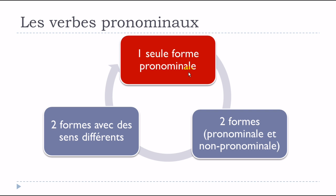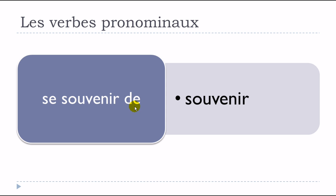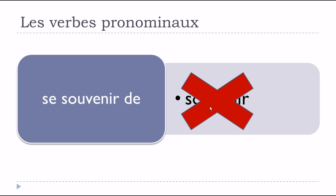Let's start with the first situation: only one form, la forme pronominale. For example, the verb se souvenir de. Many students make the mistake of wanting to use souvenir without se — they want it to be non-pronominal. Unfortunately, souvenir without se doesn't exist. If you want to use this verb, you have to use it with se, in la forme pronominale.